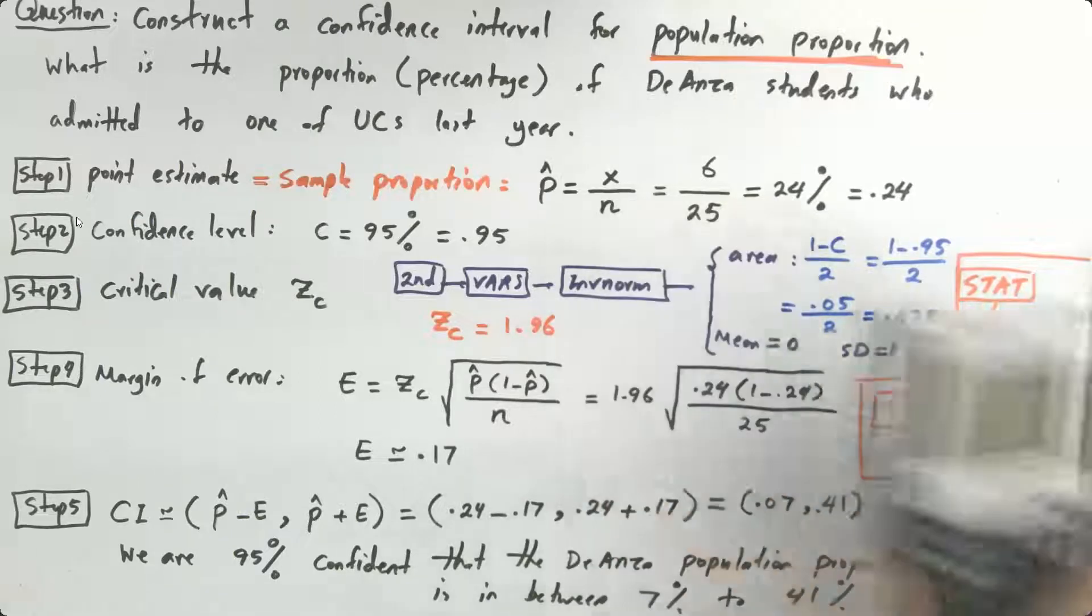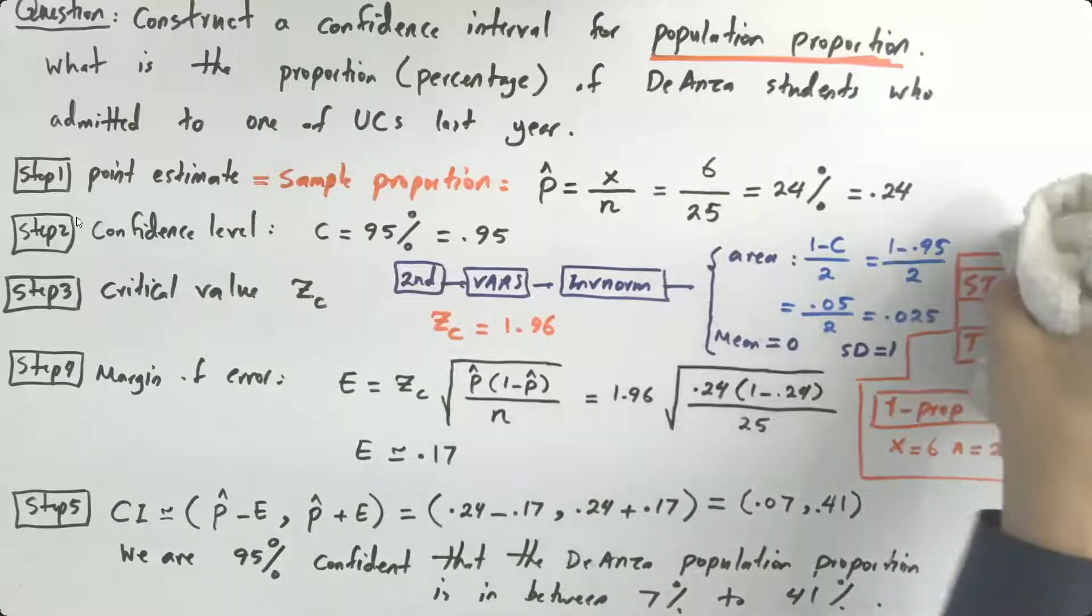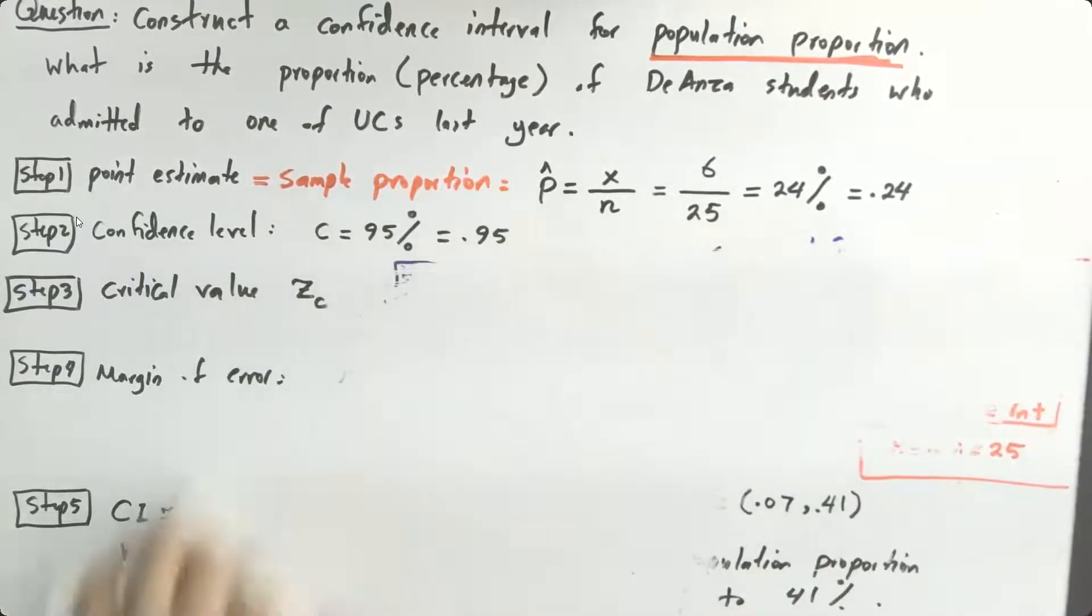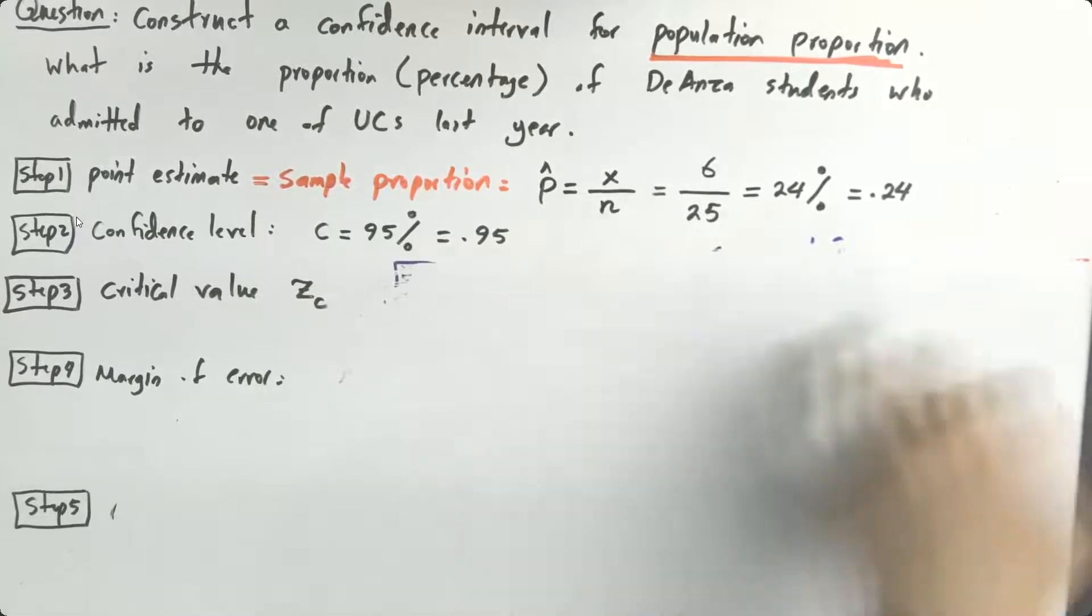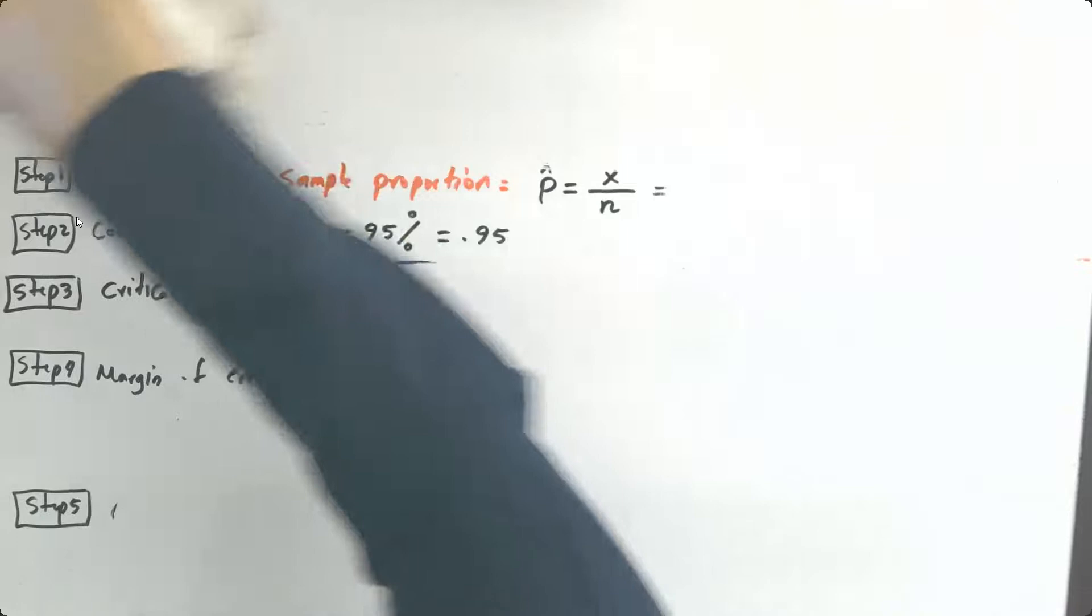So let's solve this step by step. What are the steps that we're going to take in building a confidence interval? So let's see, let's have these steps. We have to follow these steps. We don't have any other choices, but our question is now different.